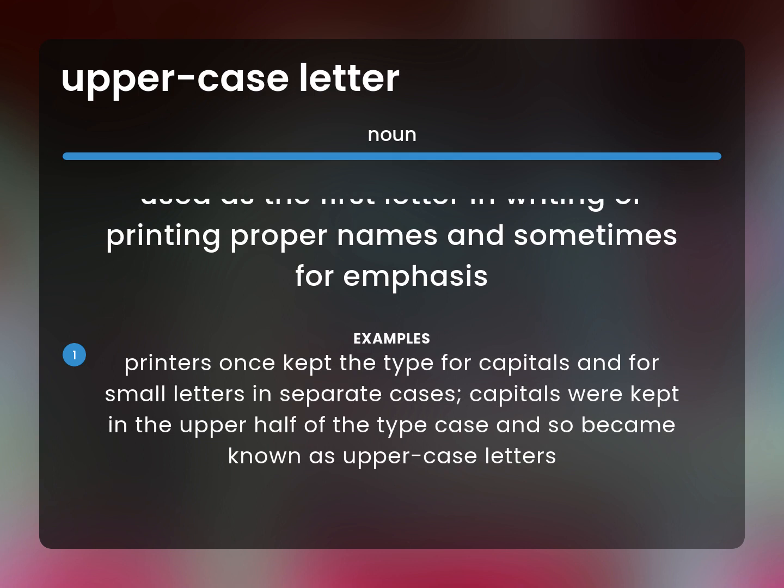Printers once kept the type for capitals and for small letters in separate cases. Capitals were kept in the upper half of the type case and so became known as uppercase letters.